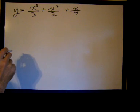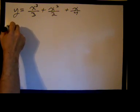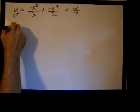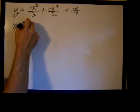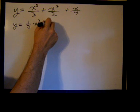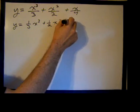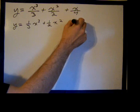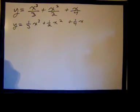I could rewrite this. It might be a little easier to see if I rewrote this as y equals one-third x cubed plus one-half x squared plus one-fourth x.